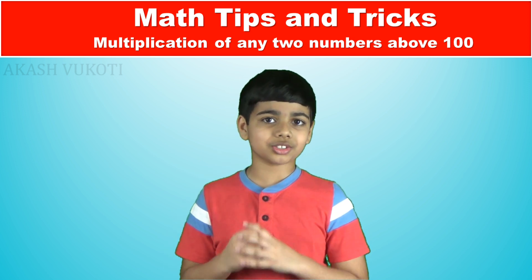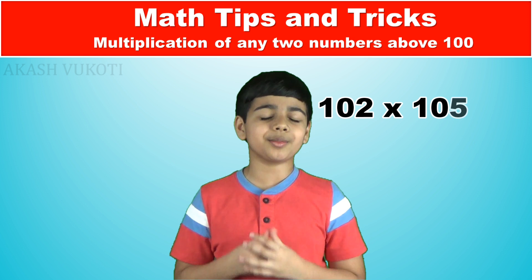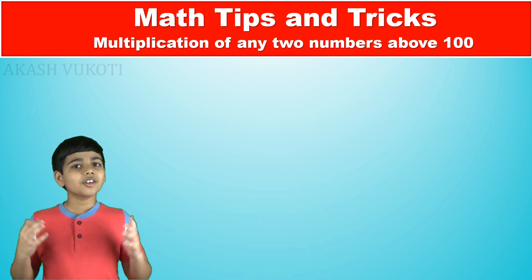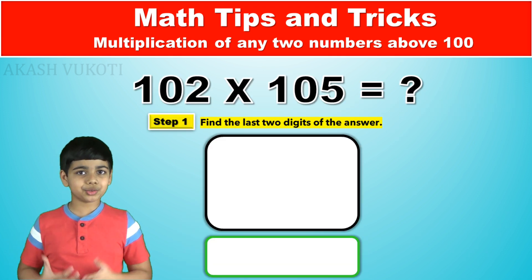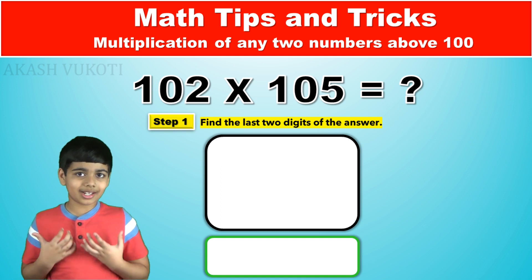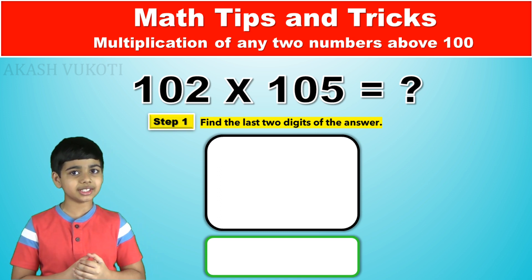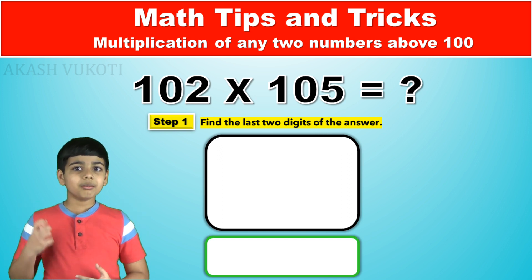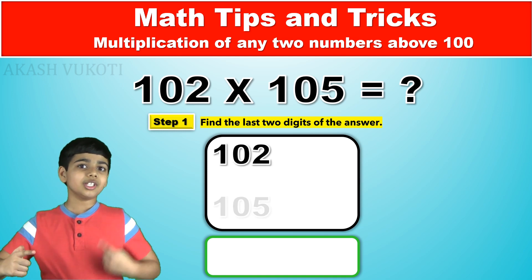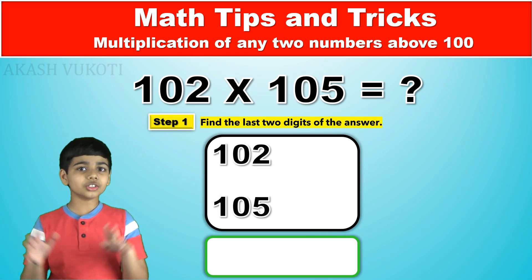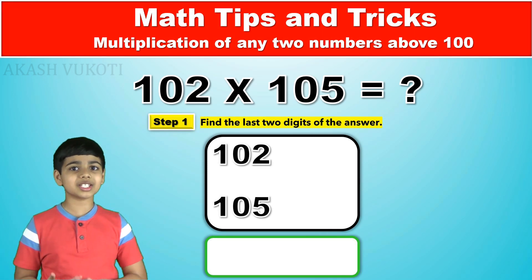Let's begin by trying to solve 102 times 105. First, take the difference between each number and 100. The reason why we use 100 specifically is because it's a base number. Both of the numbers in this equation, 102 and 105, are close to 100, which makes it easier to calculate.